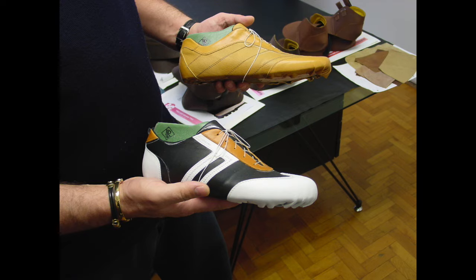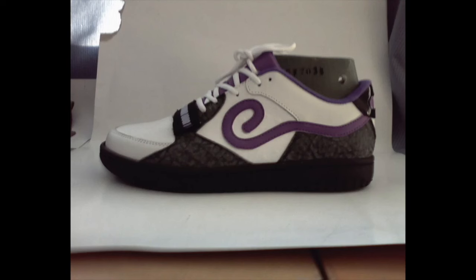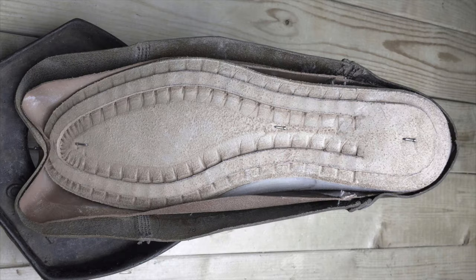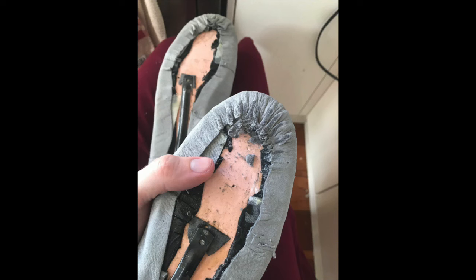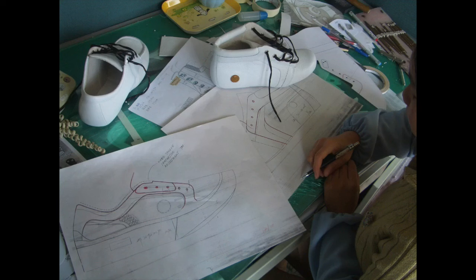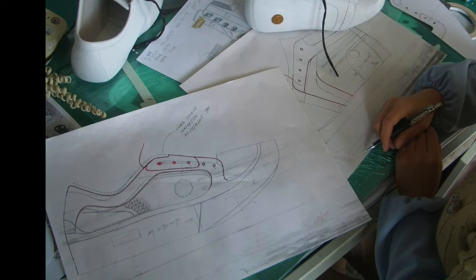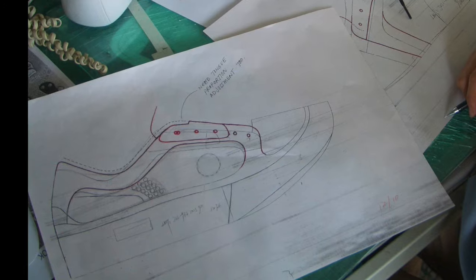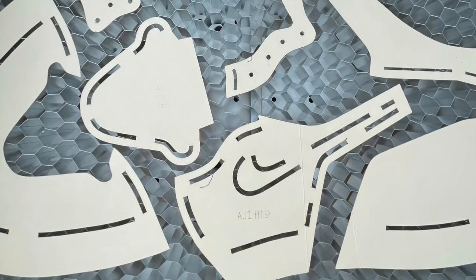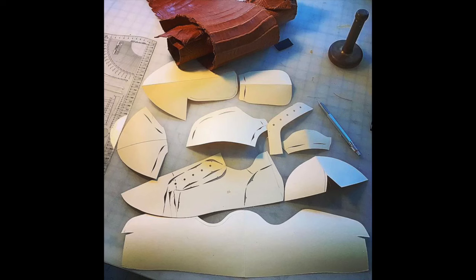The last and the upper pattern have a special relationship because the last is where the upper gets its shape. When you are building your first prototypes, you're going to end up working with a place in the factory sample room called the pattern room. The pattern room has a person called a pattern technician — usually one or two — who builds what's called a pattern gauge, which is akin to the paper pattern a tailor uses to build slacks, a blazer, or a dress, but used for building sneakers.